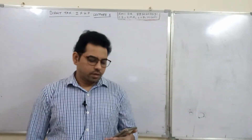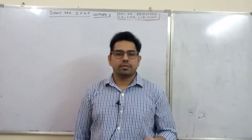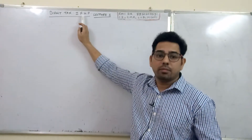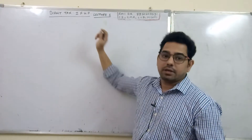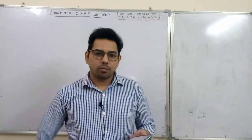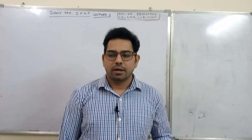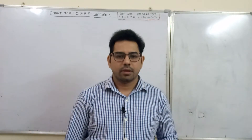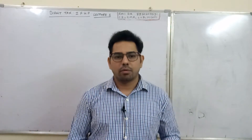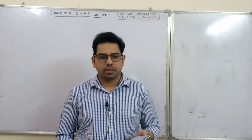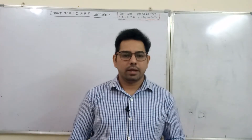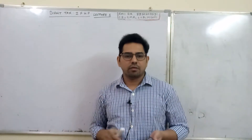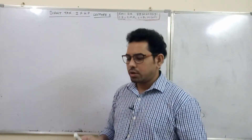Hello everyone. In this lecture I will start with the next topic of Direct Tax, that is Income from House Property, Lecture number 1. To calculate the total income in Direct Tax, there are 5 heads: Income from Salary, Income from House Property, Income from Business and Profession, Capital Gain, and Income from Other Sources. This is one of the heads — Income from House Property. This topic is small.